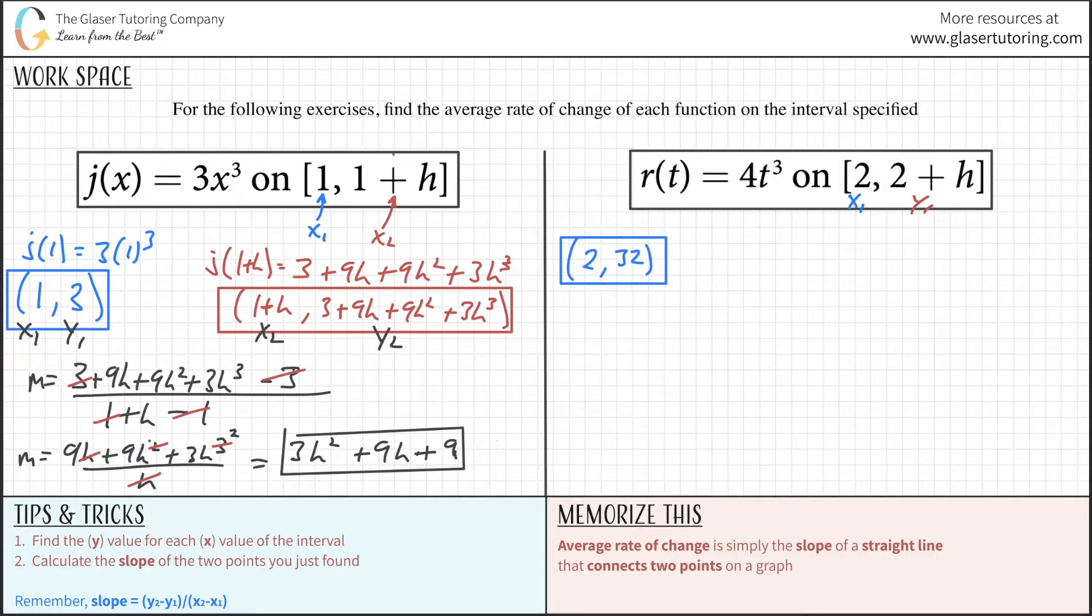Now let's do the x2 value. So r of 2 plus h equals 4 times (2 plus h) cubed. We need to cube this. I'm going to try to do this faster. First square two of the terms. Take this term and multiply it by itself first. We have 4 times (4 plus 4h plus h squared) times (2 plus h).